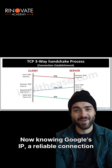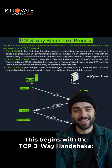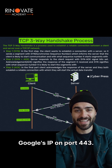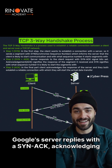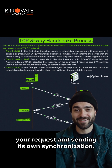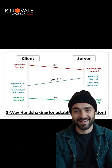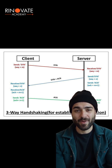Now knowing Google's IP, a reliable connection must be established before any web data can be sent. This begins with the TCP three-way handshake. Your computer sends a SYN packet to Google's IP on port 443. Google's server replies with a SYN-ACK, acknowledging your request and sending its own synchronization. Finally, your computer sends an ACK packet, completing the handshake and establishing a secure, ordered connection.